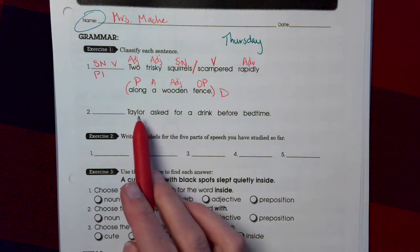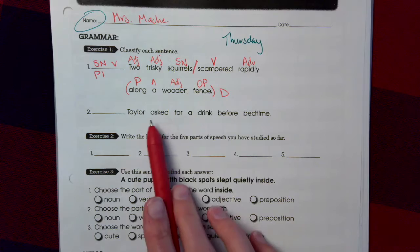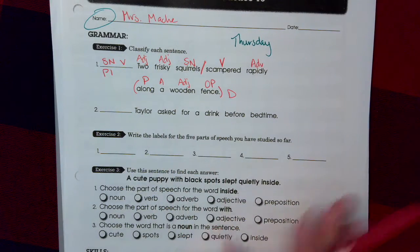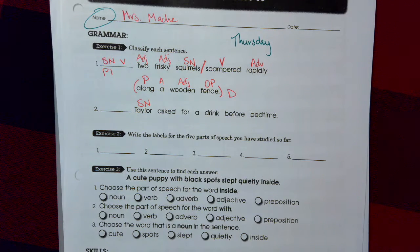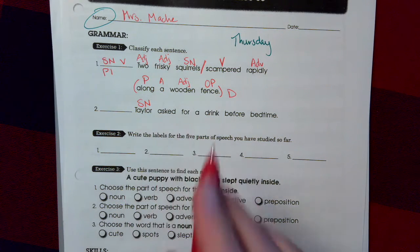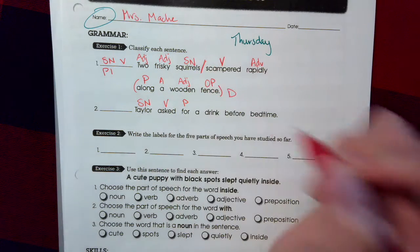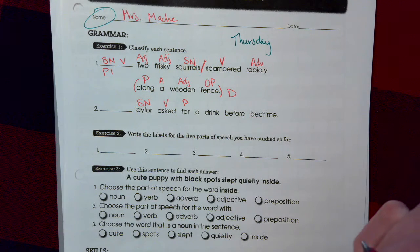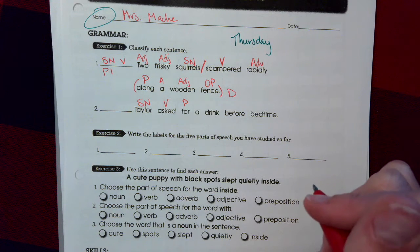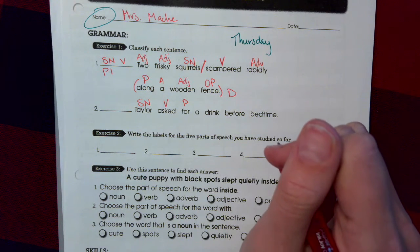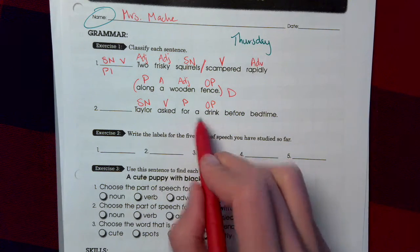Sentence 2. Taylor asked for a drink before bedtime. Who asked for a drink before bedtime? Taylor. Subject noun. What is being said about Taylor? Taylor asked. For. For what would she ask for? Drink. Object of the preposition. A.